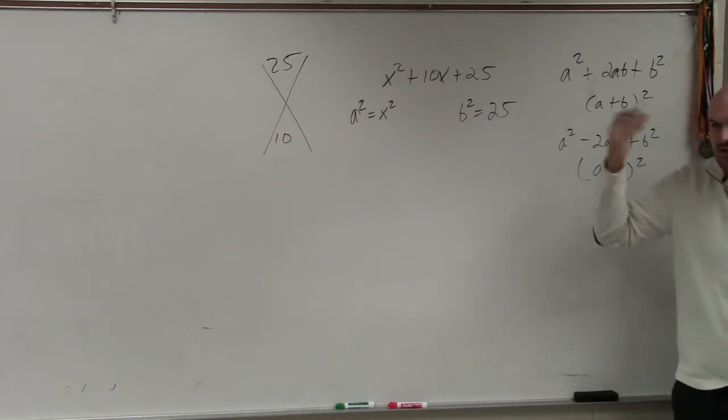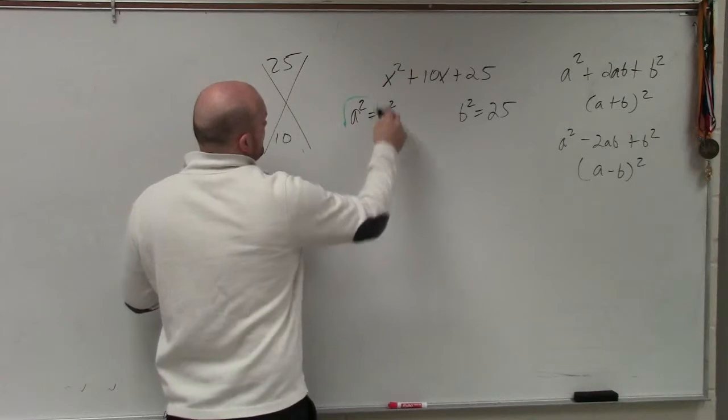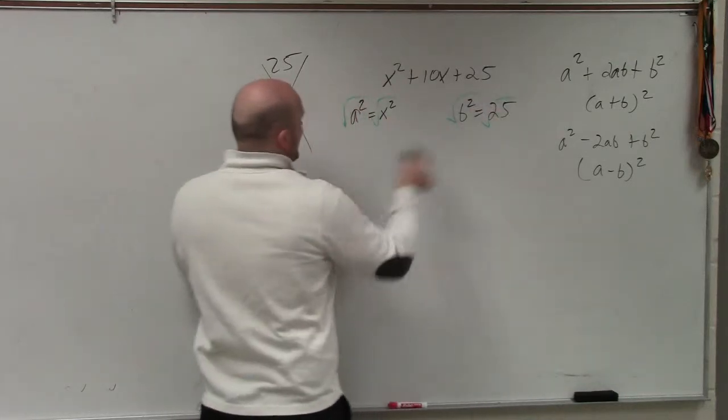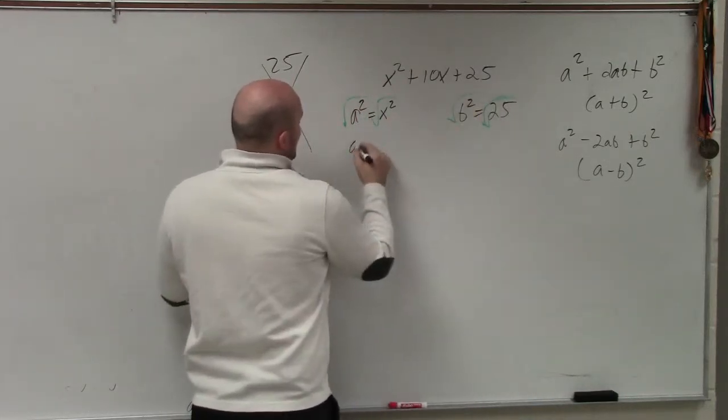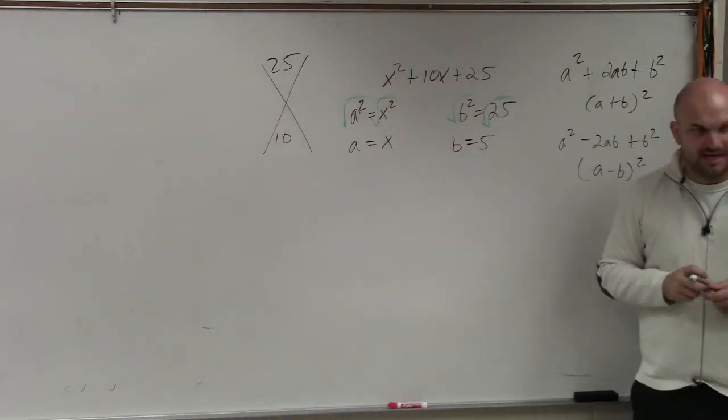Because you guys can start doing this in your head. You don't need to show all this work. If I take the square root of both sides, then I have a is equal to x and b is equal to 5. Would everybody agree with me?